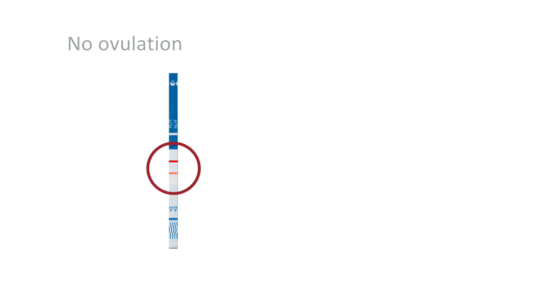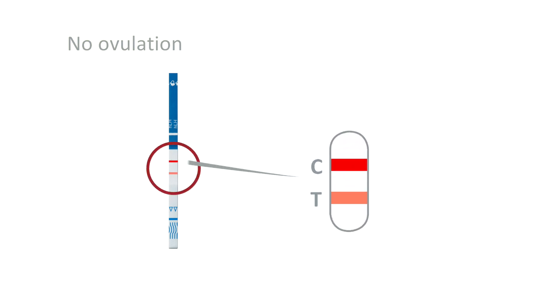If the test line is weaker than the control line, the hormone concentration is still too low to trigger ovulation. Continue the testing cycle the following day with a new test.